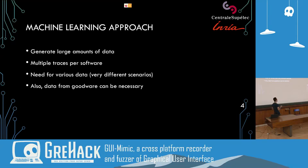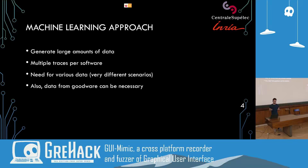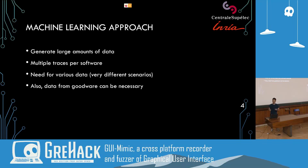We want a machine learning approach, which gives us requirements. First, we need to generate many execution traces to train our models. We also want to do behavioral analysis for particular software, meaning we need many traces per software to understand behavior. That's why we need varied data to explore all possible paths and achieve the largest code coverage of a given software. Finally, for some of our models, we want to fuzz benign software to learn typical behavior.